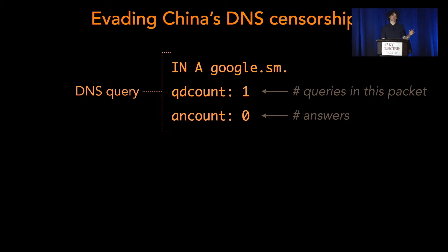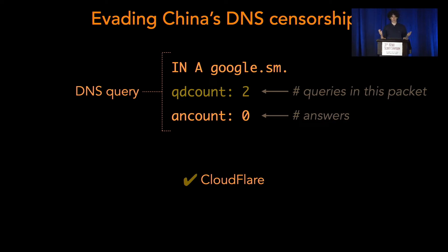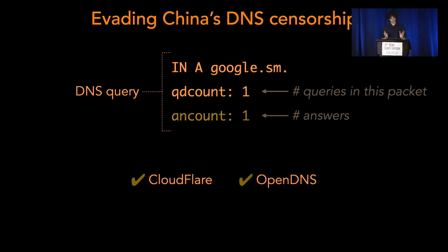The QdCount field represents the number of queries in a DNS request. In this case we only have one — google.com — and QdCount is set to one. If we flip this to two, China's DNS censor will let it through and Cloudflare responds with a valid IP. If you also flip the answer count to one — even though there are no actual answers in the query — it again evades China's censor, and both Cloudflare and OpenDNS respond with valid IPs.